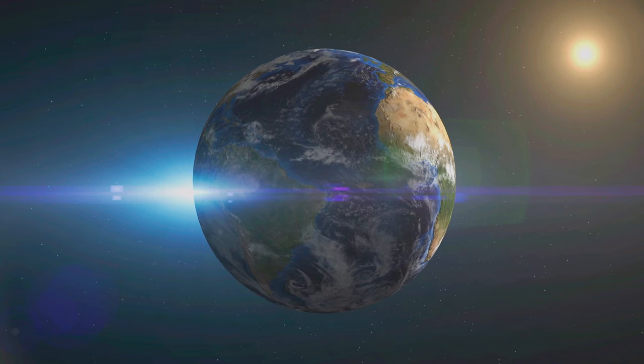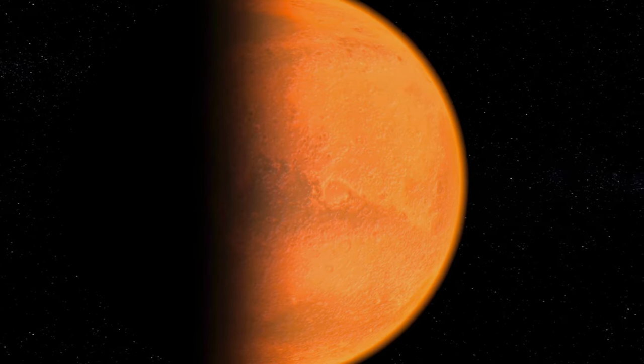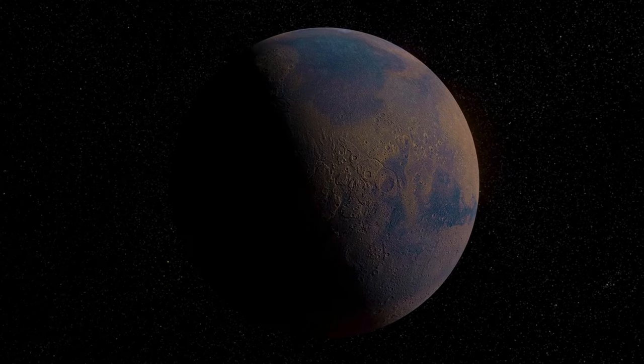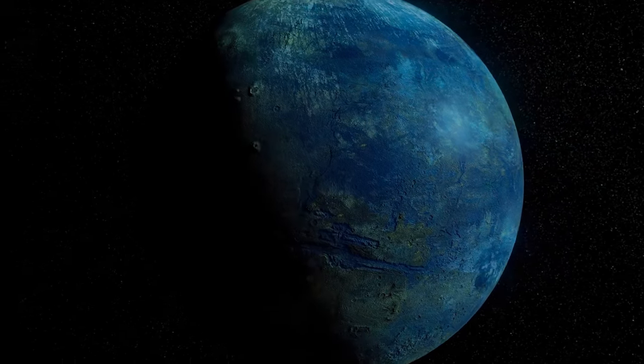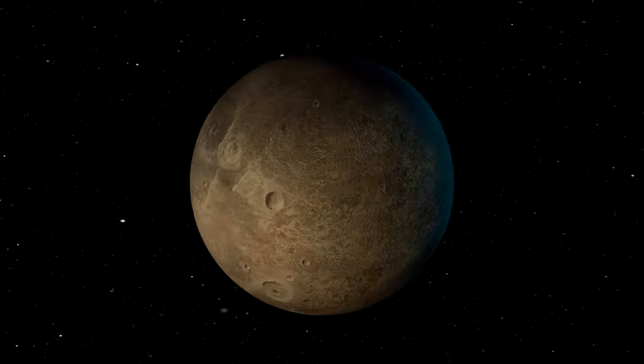Closest to the sun, we find the four terrestrial planets. The smallest planet, Mercury, is a rocky world with extreme temperature variations. Its surface is heavily cratered, resembling our moon.